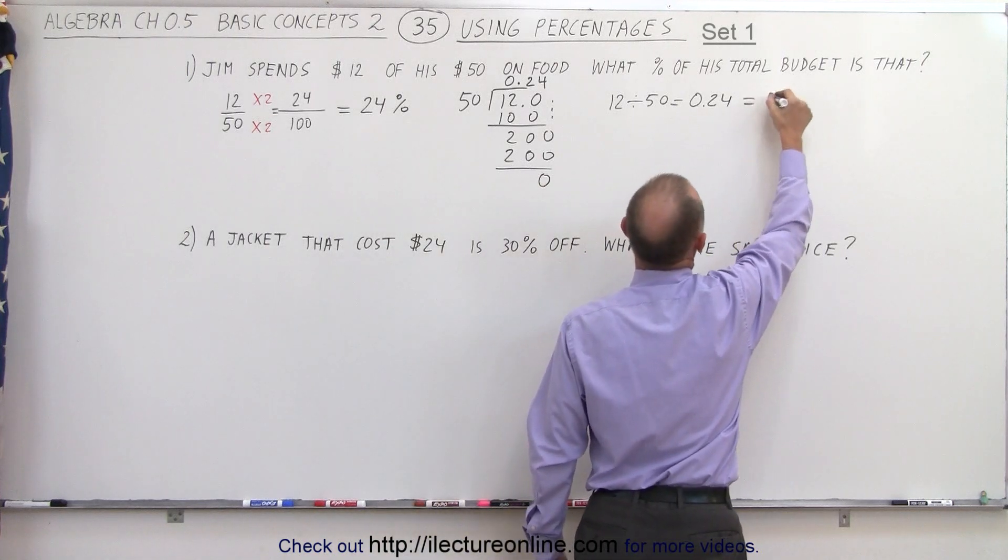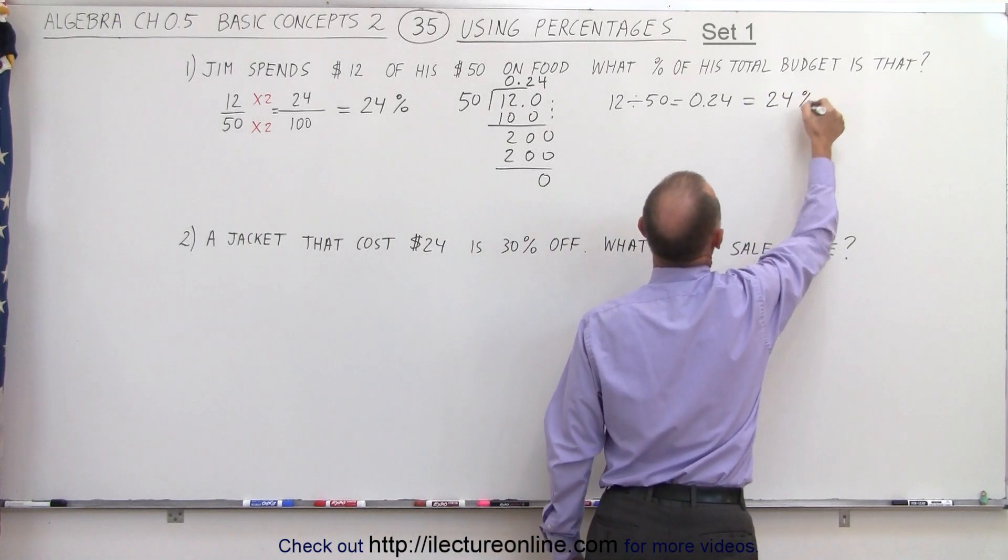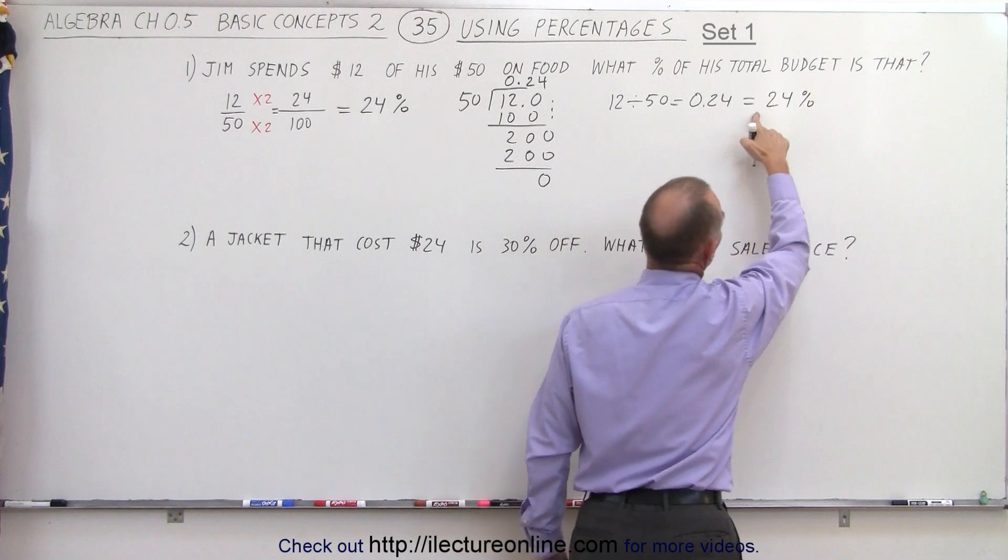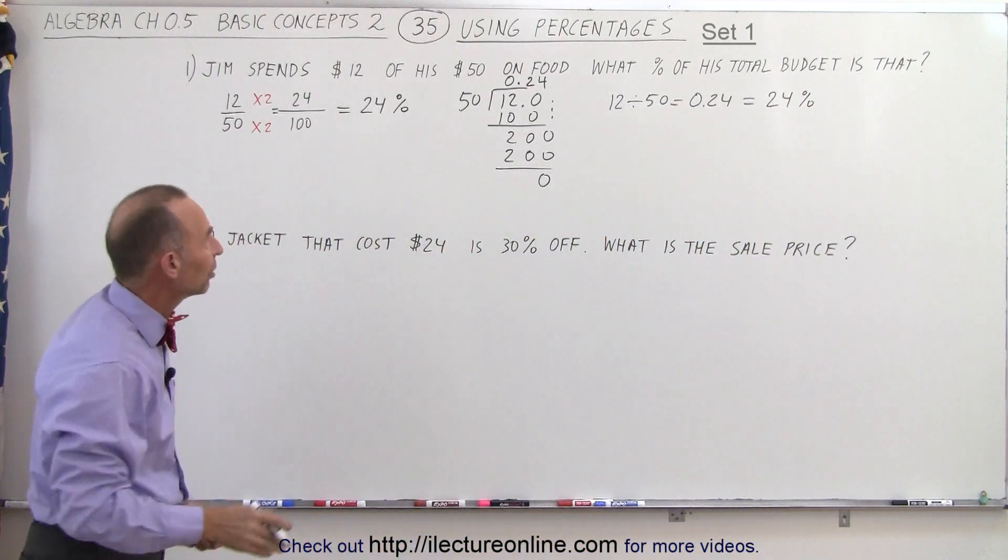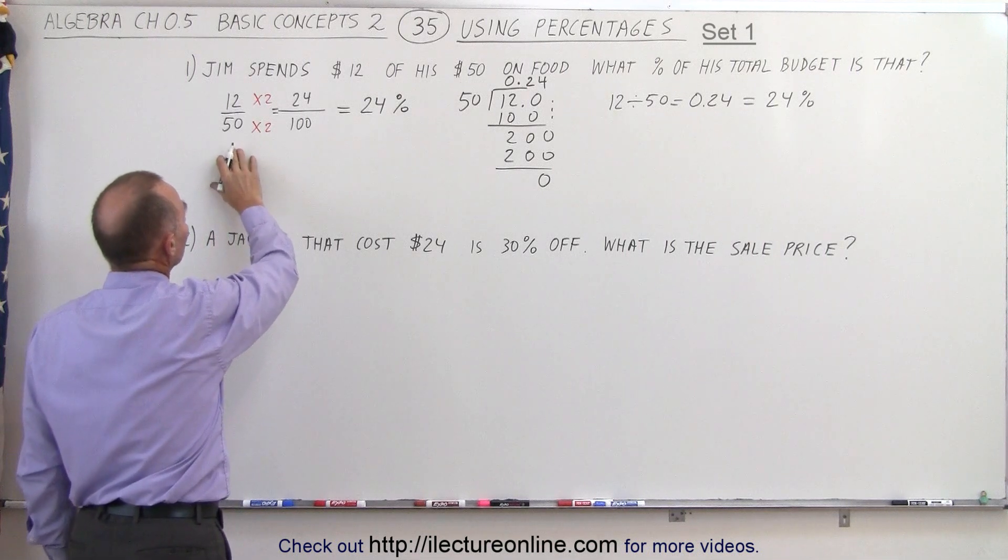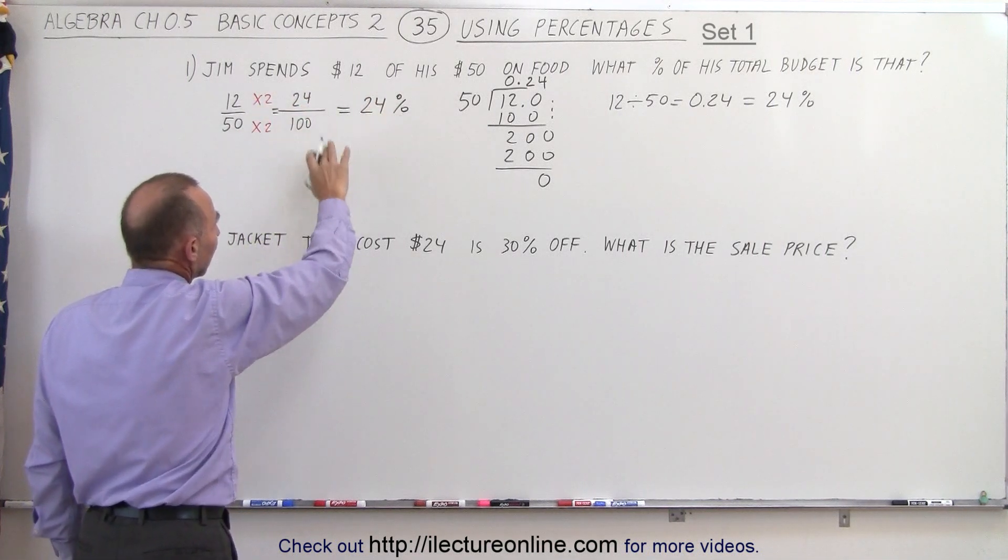So now we've changed that number into a decimal, and then we can write that as 24%. Because whatever we have to two decimal places, we have the same number in percent. So that's the methodology to convert a number like 12 of 50 into a percent.